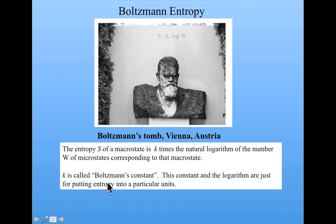Well, K is called Boltzmann's constant. The constant and the logarithm are just for putting the entropy into particular units. So you can really look at this as S equals W. Boltzmann's entropy equals, or is proportional to in some sense, the number of microstates corresponding to the macrostate.